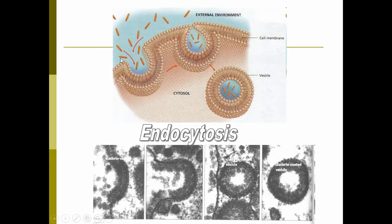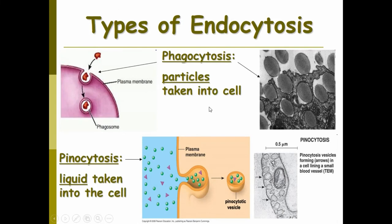Here's endocytosis: things come into a little pocket, the pocket closes, and what's formed is called a vesicle — you surround the membrane around whatever you're bringing into the cell. There are two types: phagocytosis, where you take in solid particles, and pinocytosis, where you take in liquid. The liquid gets engulfed in a circle forming a liquid vesicle, or big particles come in and form a phagosome — a large material forming a vesicle inside your cell.